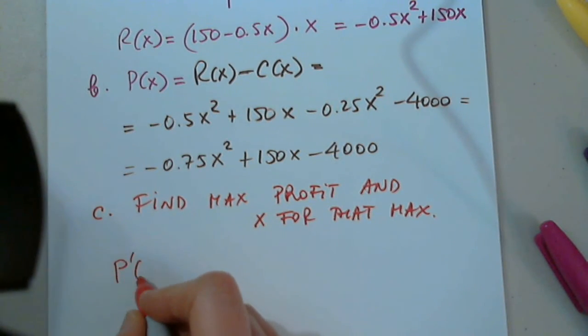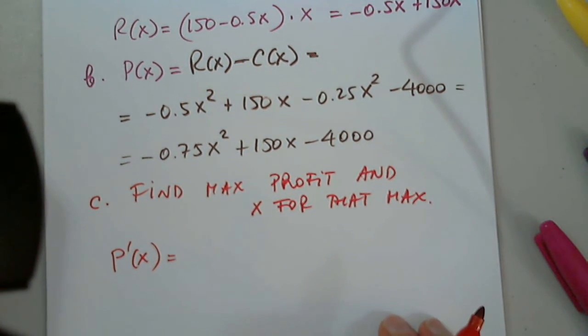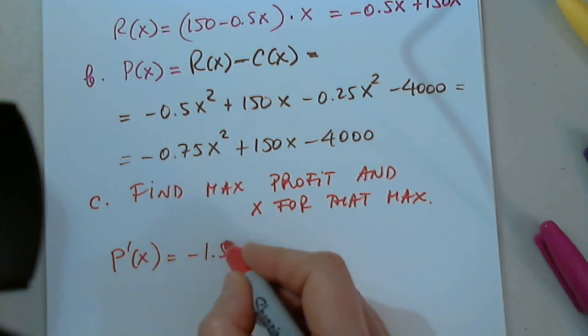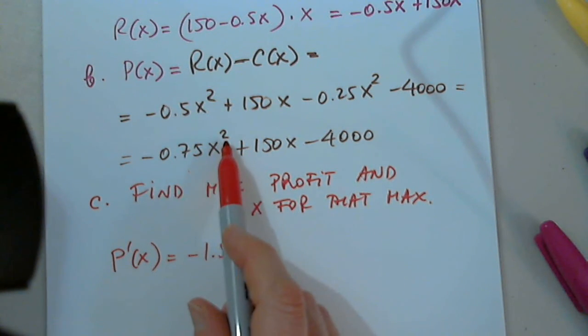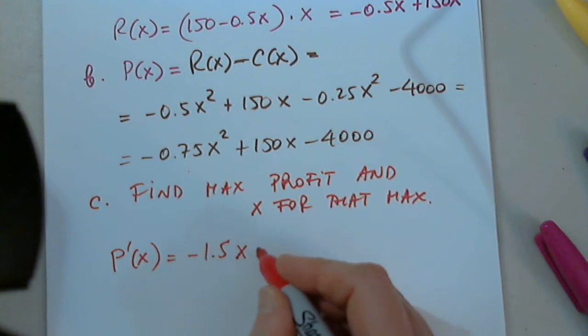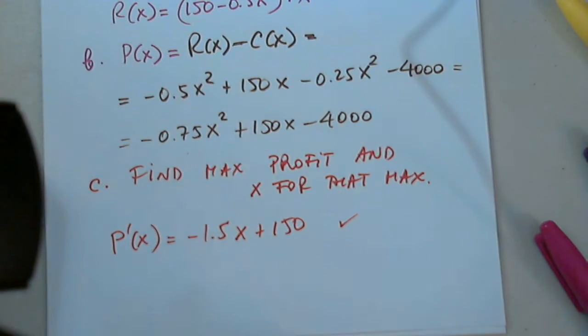So, P. Who was that, Michelle? Thank you. So, P prime, we bring 2 in front, so I get negative 1.5, 75 times 2, right? X, of course, and plus 150. I found the derivative. That's our first step. Can anyone other than Rita and Michelle and Lake tell us what is the next step? What do I need to do next?